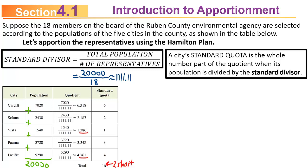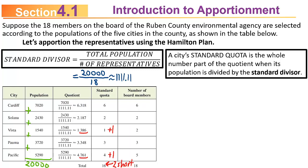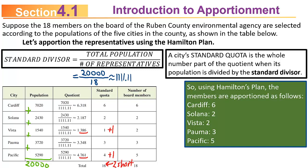Using Hamilton's method, since we're short we find the two quotients with the biggest fractional parts. Pacific has a fractional part of 0.761, so they're on top. The next largest is Vista's 0.386. Both cities get an extra seat — Vista goes from 1 to 2, and Pacific goes from 4 to 5. Re-adding gives 18. So using Hamilton's method: Cardiff 6, Solana 2, Vista 2, Palma 3, and Pacific 5.